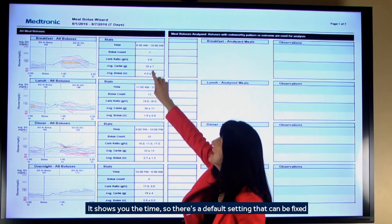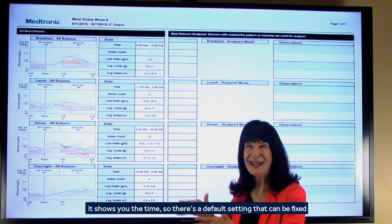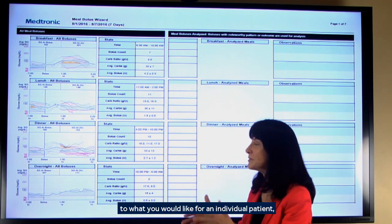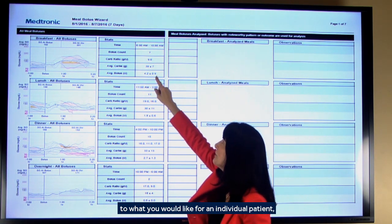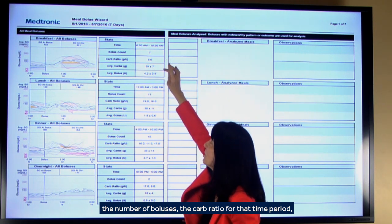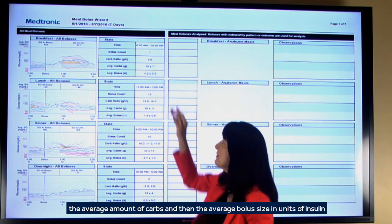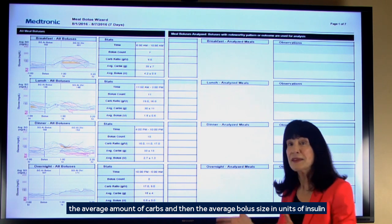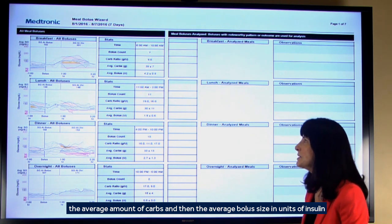It shows you the time, so there's a default setting that can be fixed to what you would like for an individual patient, the number of boluses, the carb ratio for that time period, the average amount of carbs, and then the average bolus size in units of insulin.